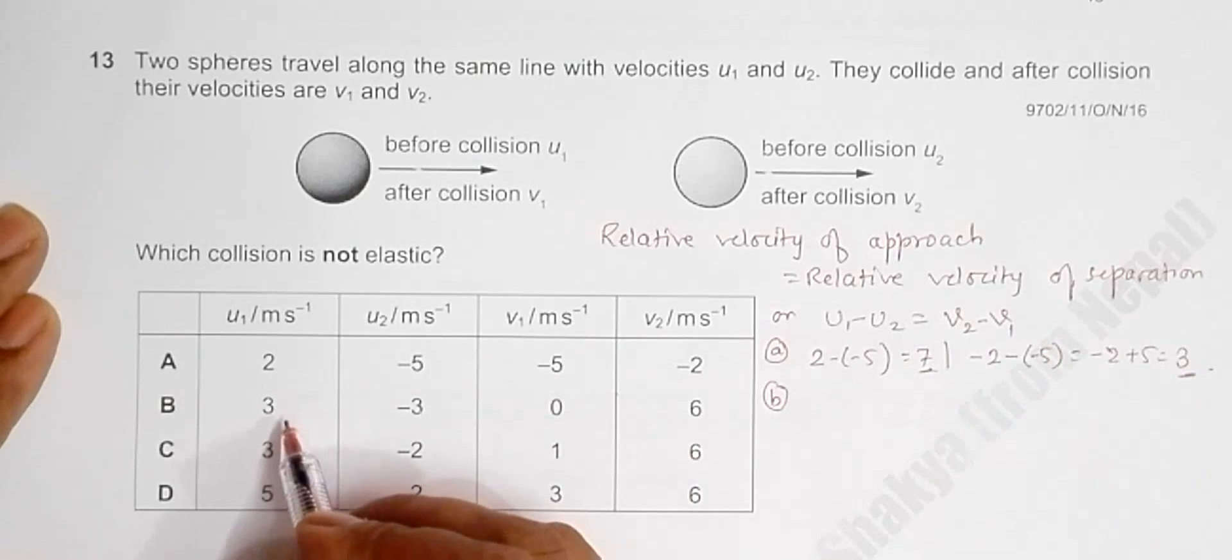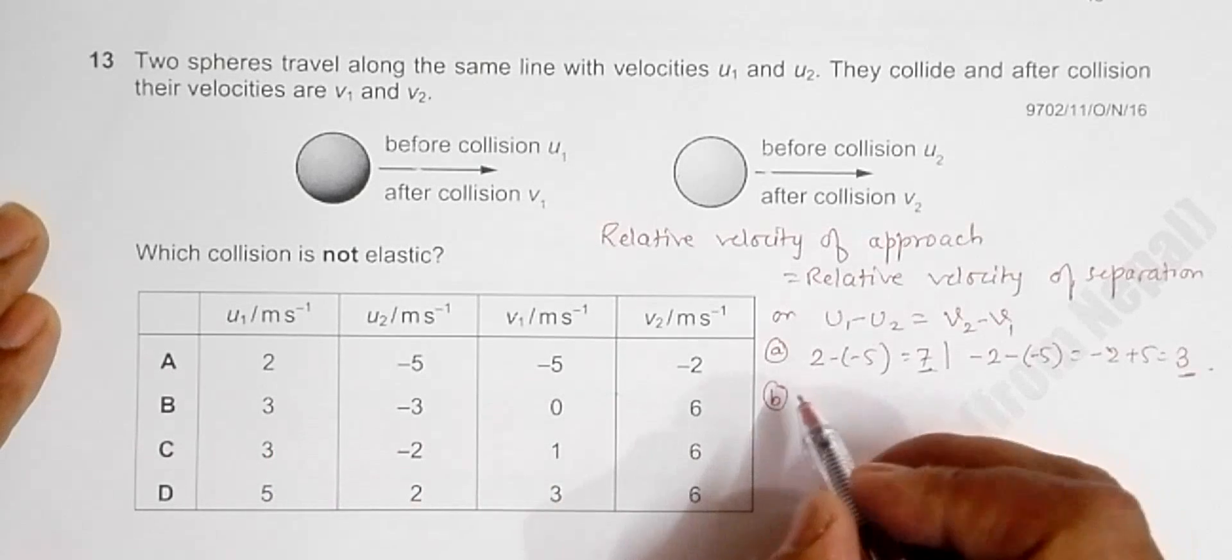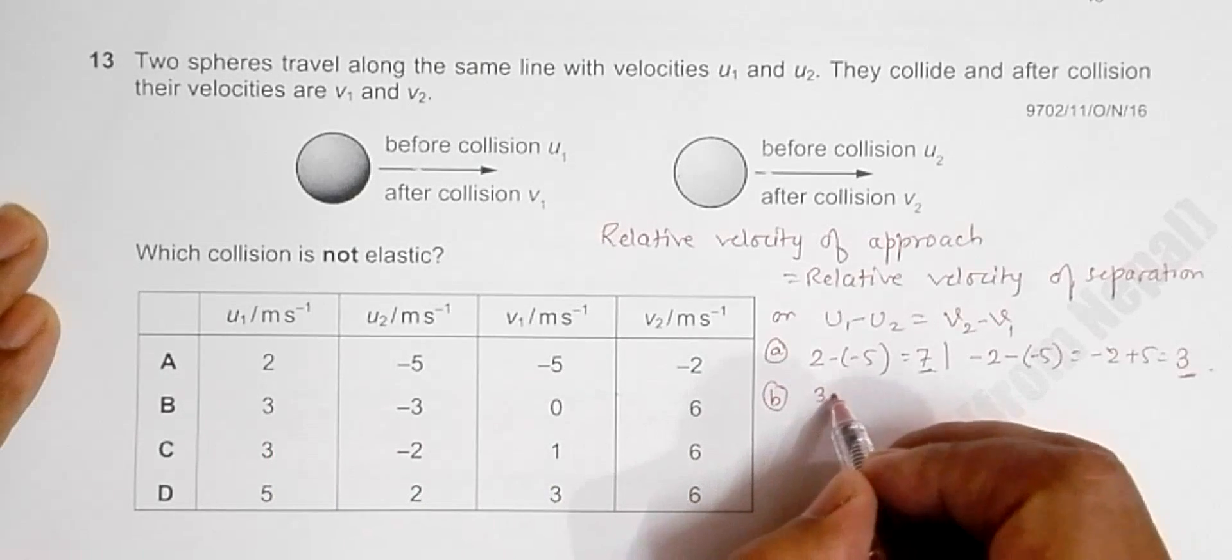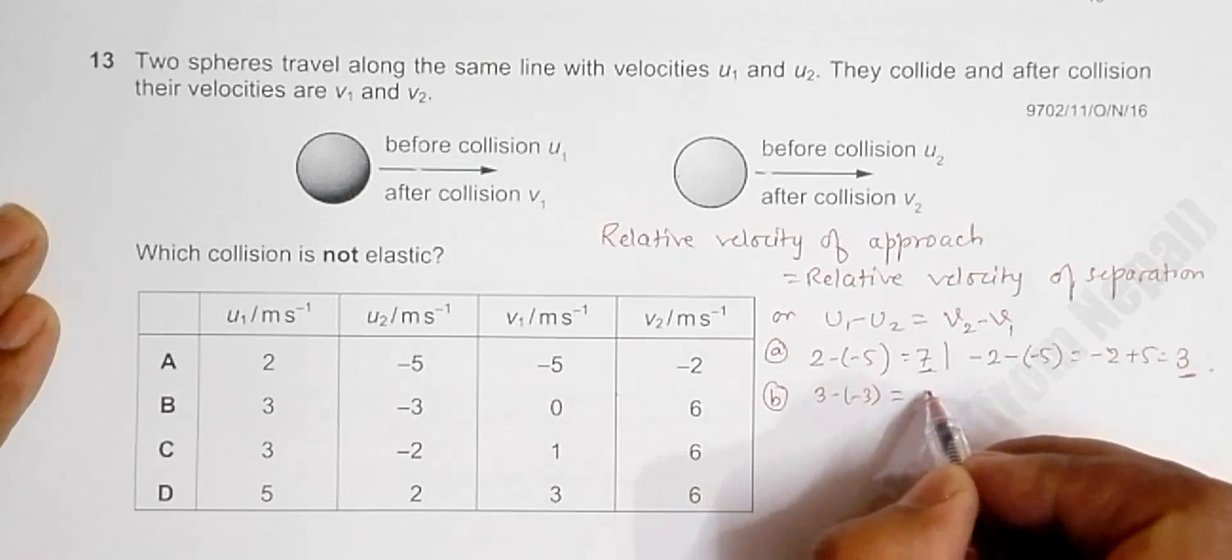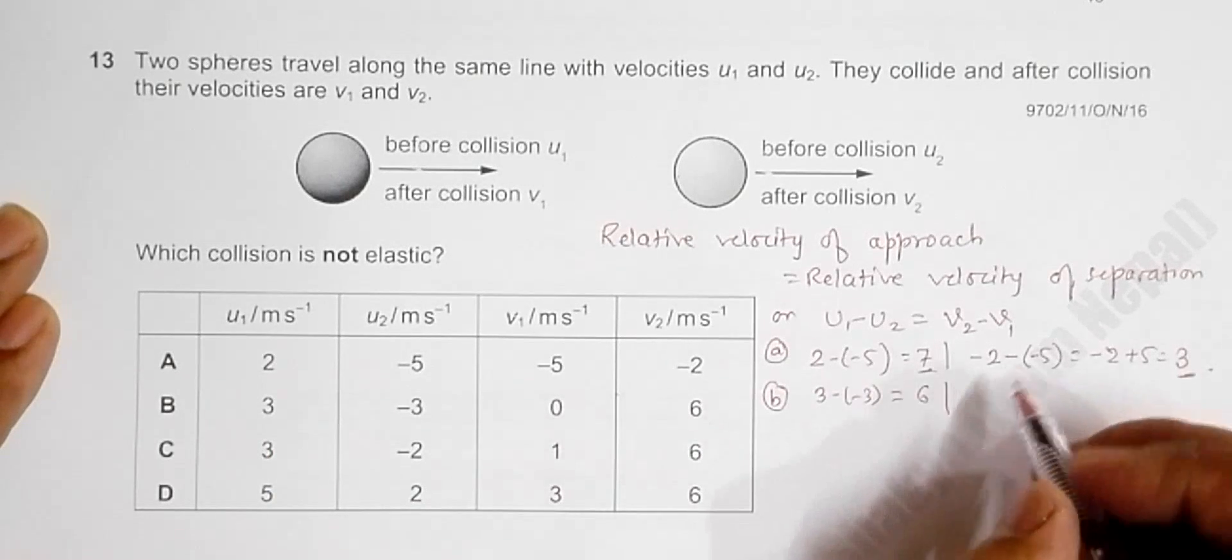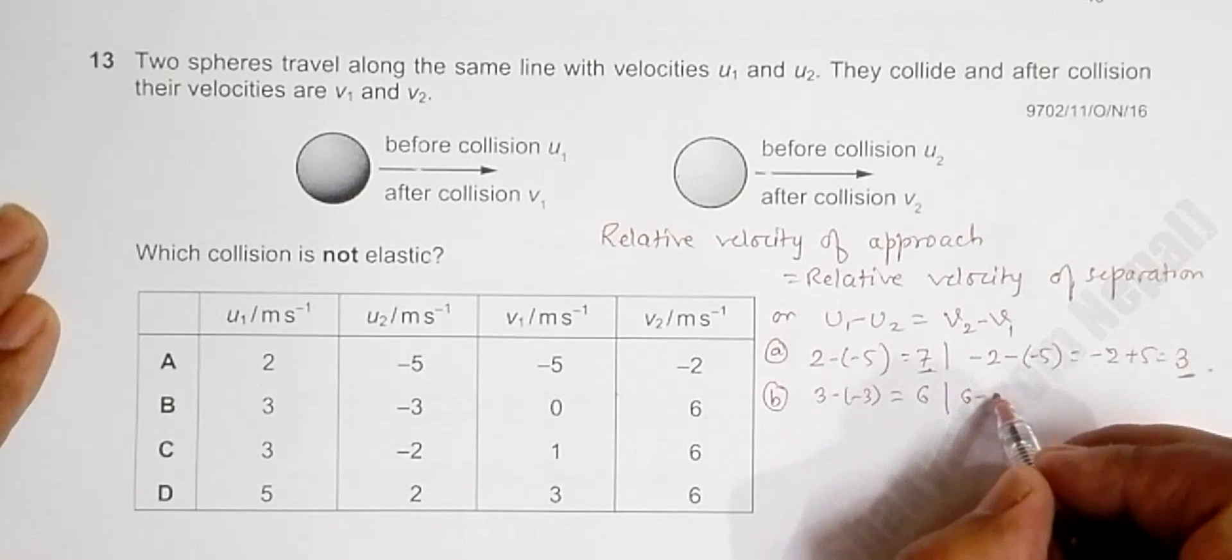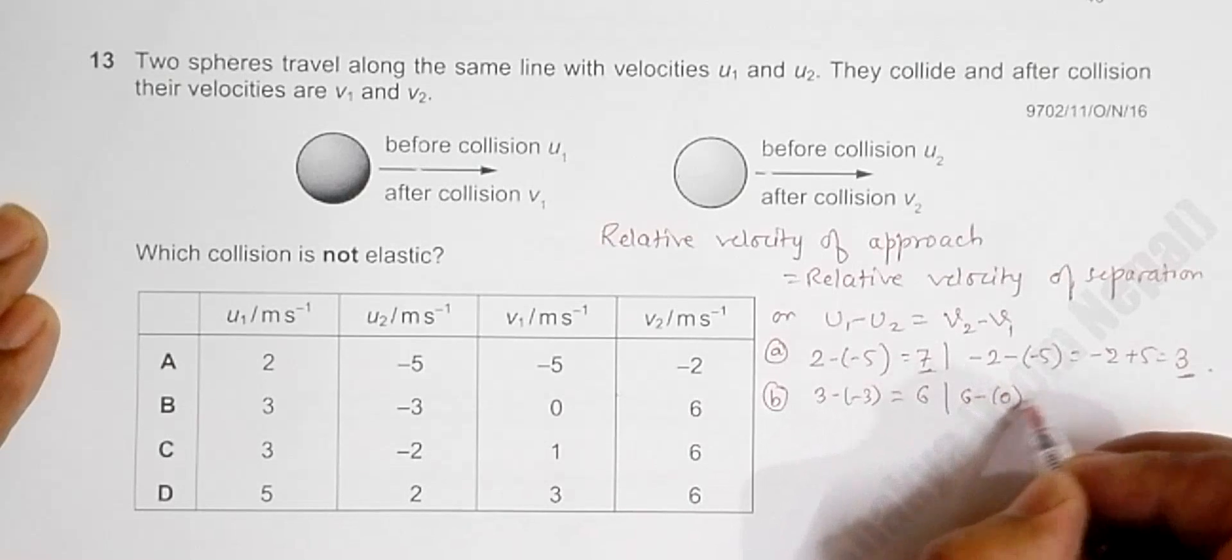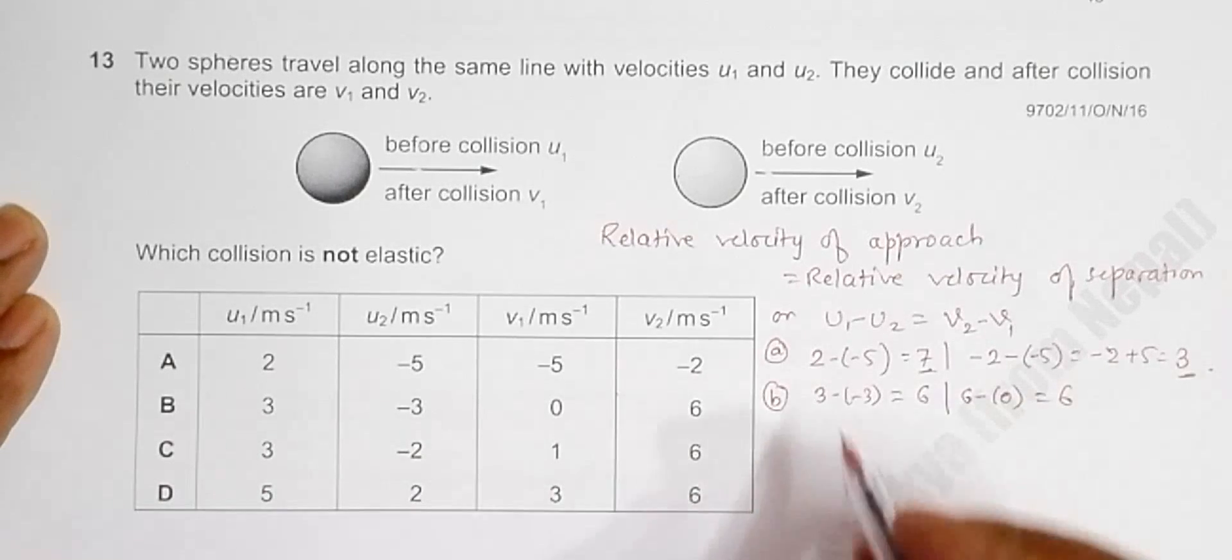Let's go for other choices as well. For choice B, we'll have 3 minus (-3), that's equal to 6, and here we'll have 6 minus 0, that's equal to 6. Equal, so it is elastic. So B is not the correct choice.